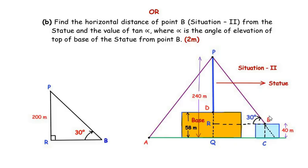Find the horizontal distance of point B (situation 2) from the statue, and the value of tan α where α is the angle of elevation of the top of the base of the statue from point B. In situation 2, the angle of elevation at B was 30 degrees, the height of the base at B was 40 meters, the statue base was 58 meters, and the total height was 240 meters. We need to find BR, the horizontal distance.